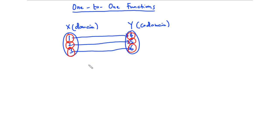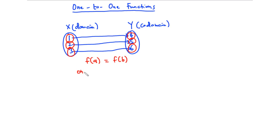Now if this happens, we say that the function f(x) is one-to-one, and we can represent this mathematically as f(a) = f(b). So if you have a function where each of the elements in the domain corresponds to a distinct value in the codomain, we say that the function is one-to-one.